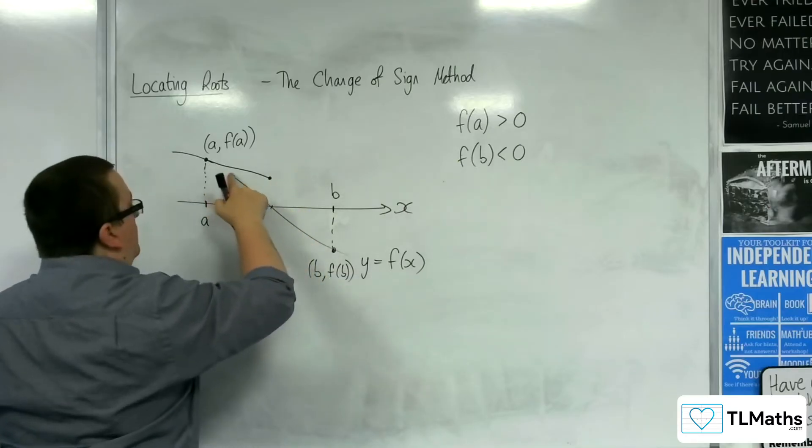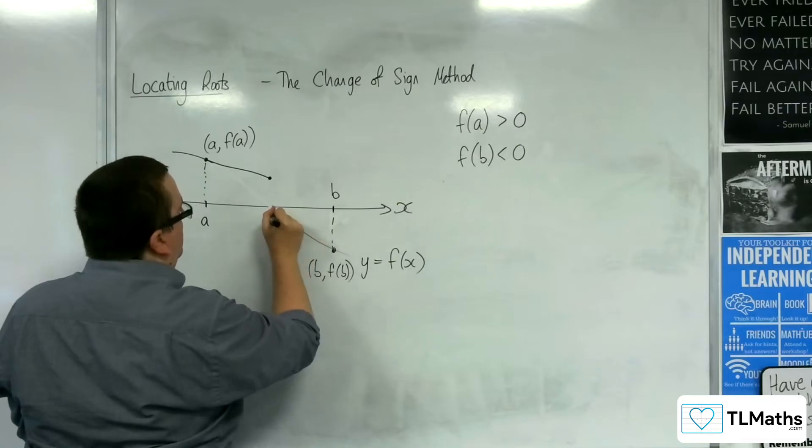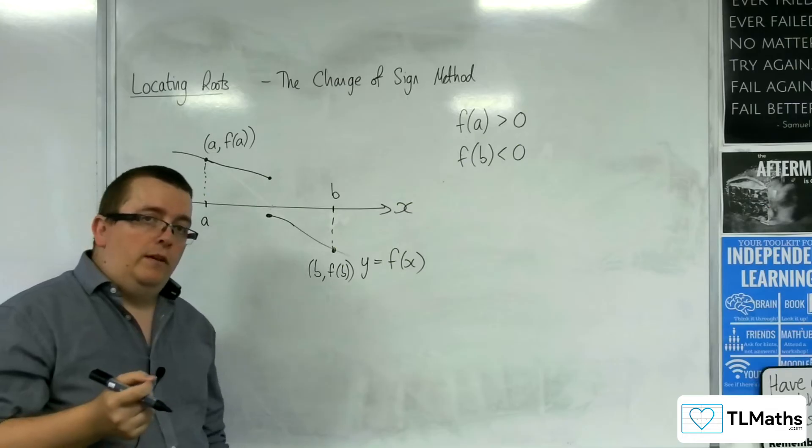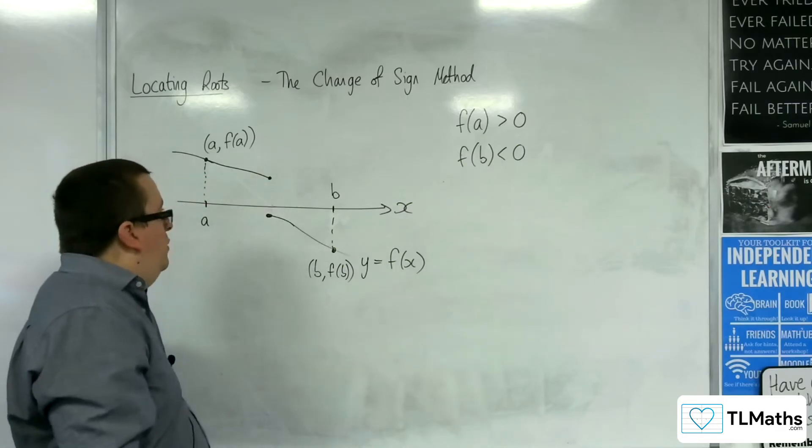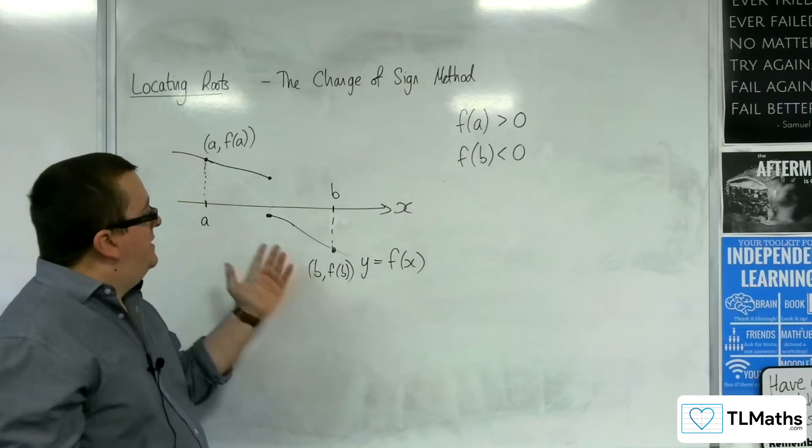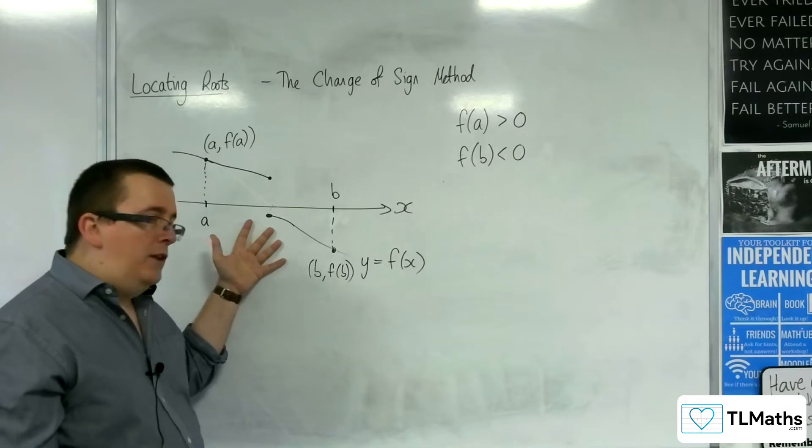And then maybe it looks like this. Maybe there is a discontinuity in the curve, this kind of step. And so you would still get that f(a) is positive and f(b) is negative, but the curve has not crossed the x-axis between those two points.